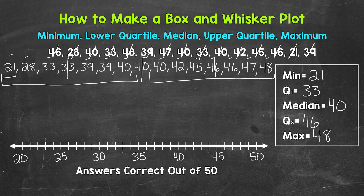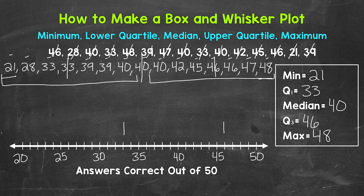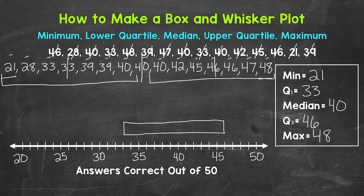Now let's move on to the box of the box and whisker plot — that's going to be from the first quartile to the third quartile. The first quartile is 33, so let's make a mark at 33. The third quartile is 46, so let's make a mark there. Those are the sides that the box or rectangle will extend to, so let's create that rectangle. It goes from the lower quartile to the upper quartile.